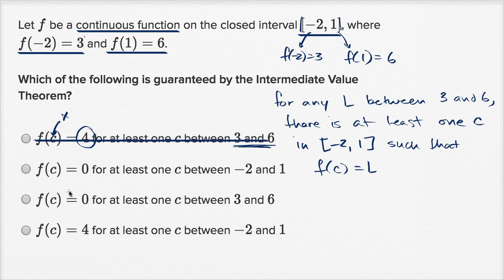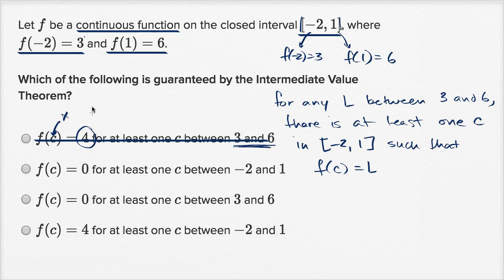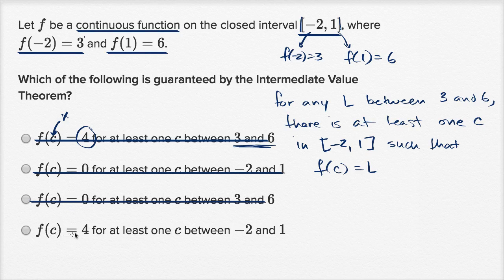They're trying to confuse us. 'f of C equals zero for at least one C between negative two and one' — they got the interval along the X axis right, but it's not guaranteed by the intermediate value theorem that f of C is going to equal zero, because zero is not between three and six. So I'll rule that one out. We're left with: f of C is equal to four for at least one C between negative two and one. Four is between three and six, and that's in this interval, so I'm feeling good about that.